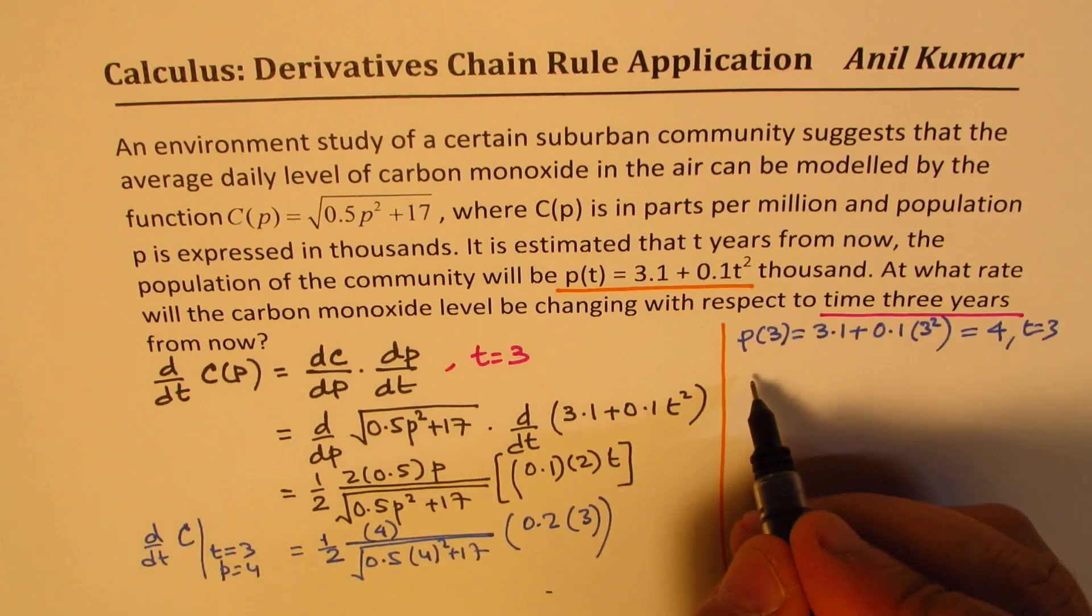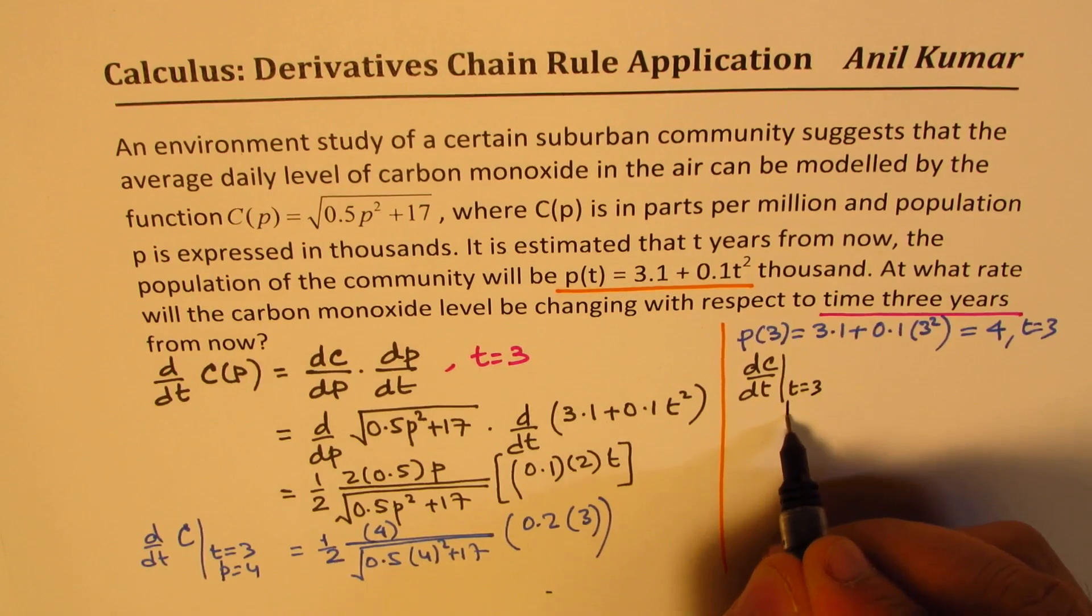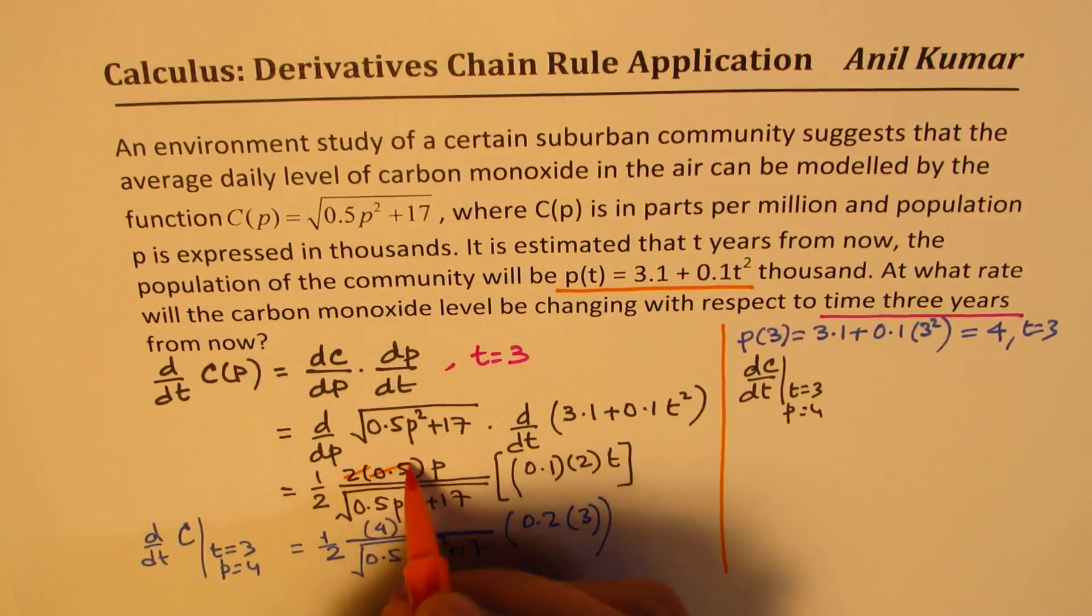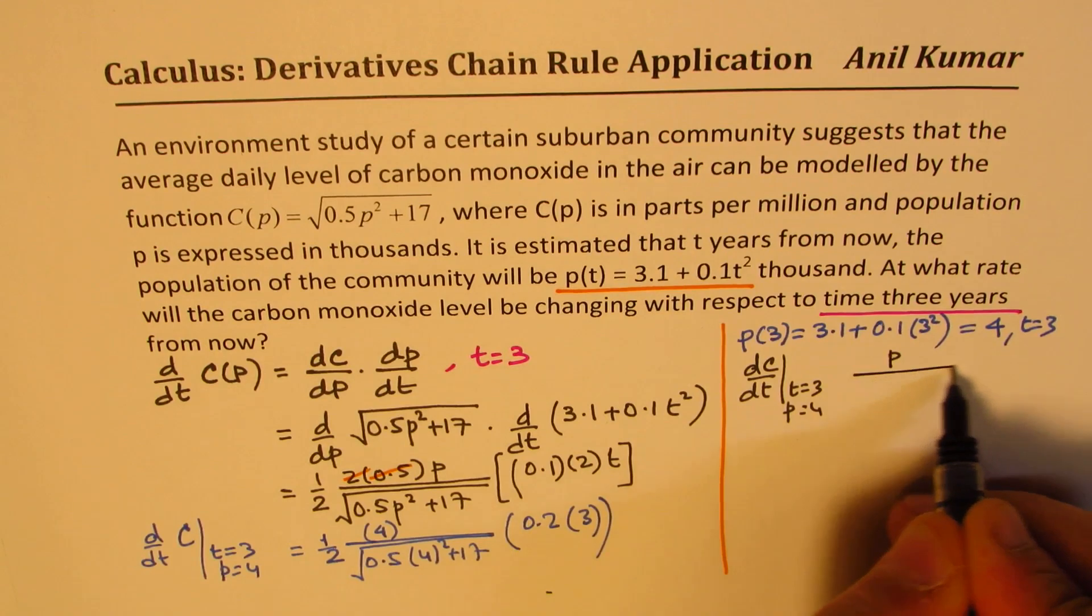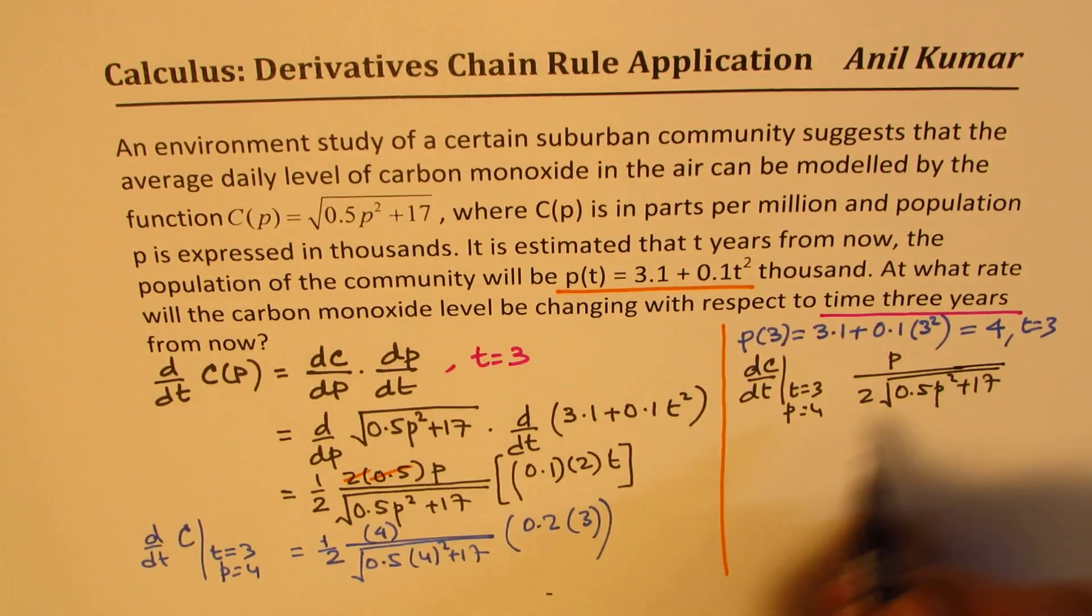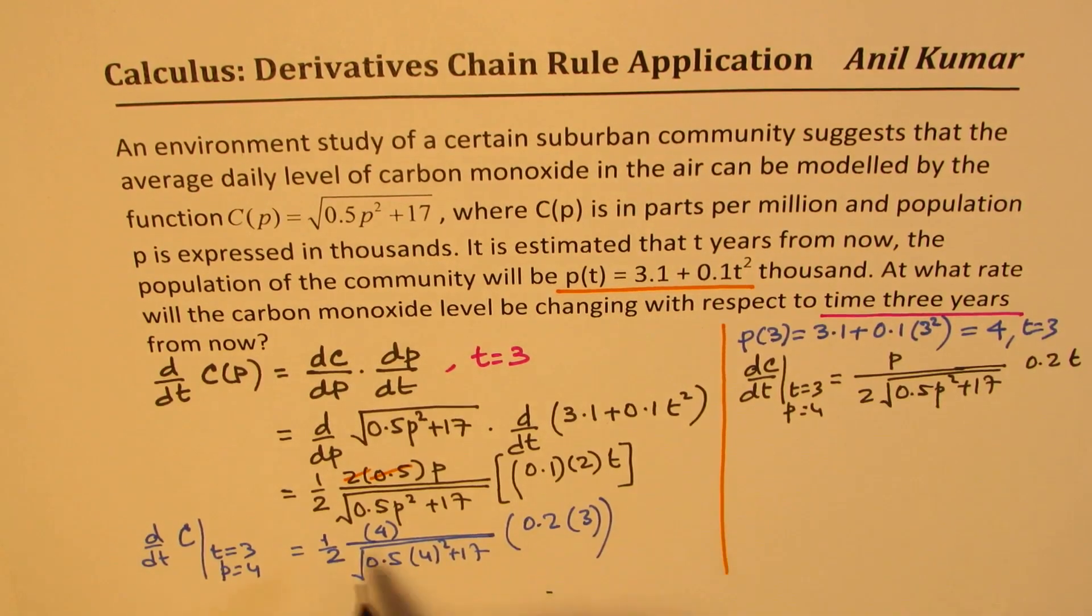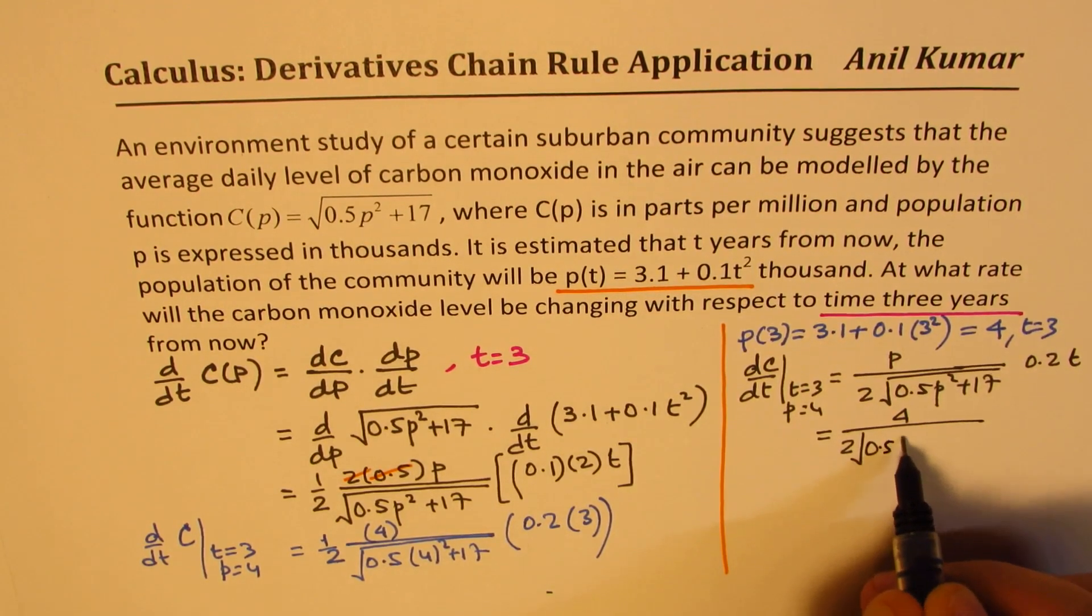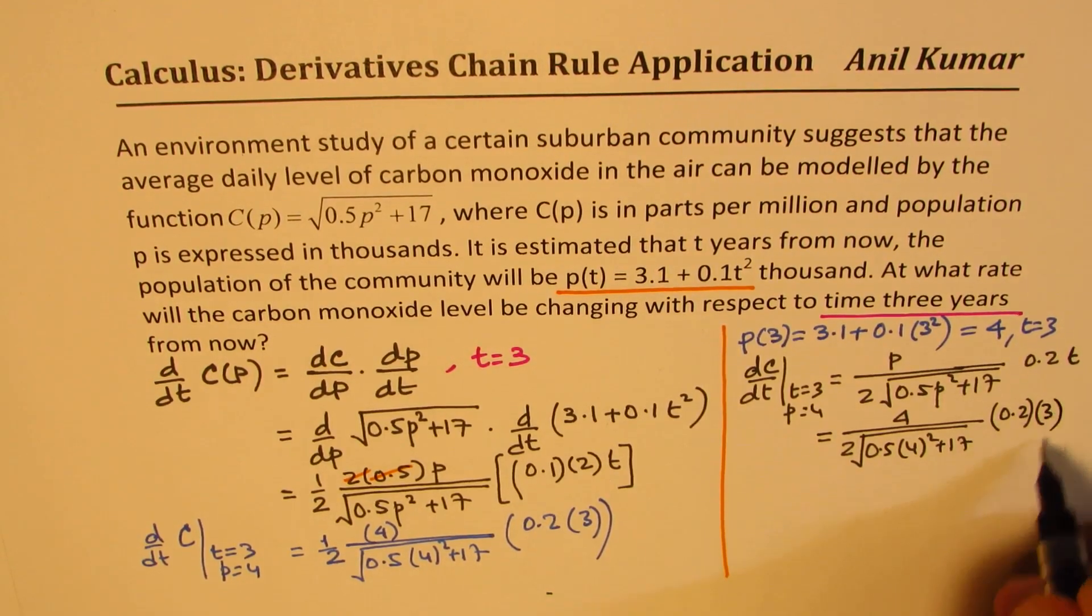So it's better to simplify at times and then plug in the values and then write. So let me actually write this function again here. So we have dC/dt at t = 3. At that time, we found p is 4. The formula, you could simplify this. Better to cancel this, 0.5 times 2. We get p over 2 times square root of 0.5p² + 17, and that is 0.2t. So let's substitute these values as we did here and then calculate. So we have 4 over 2√(0.5 × 4² + 17) times 0.2 × 3.